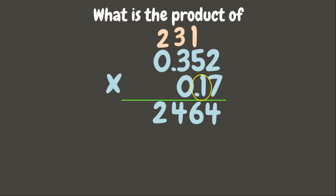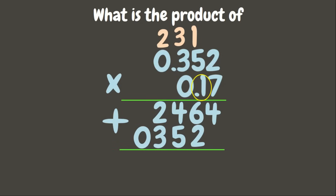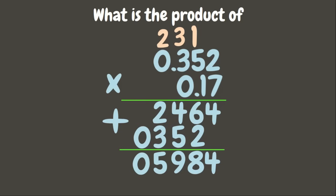7 times 0 is 0 plus 2 is 2. Next: 1 times 2 is 2, 1 times 5 is 5, 1 times 3 is 3, 1 times 0 is 0. Since the next digit is 0 we don't have to multiply it. Now let's add the products: bring down 4, bring down 4, 6 plus 2 is 8, 4 plus 5 is 9, 2 plus 3 is 5, and bring down 0.